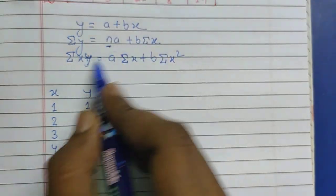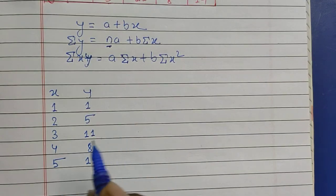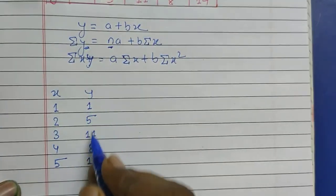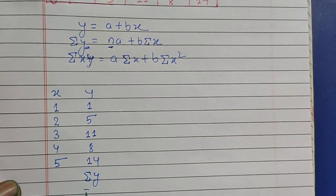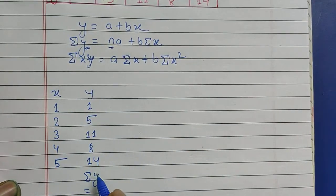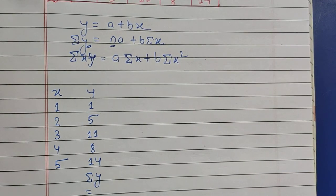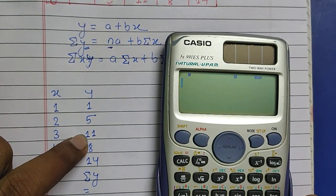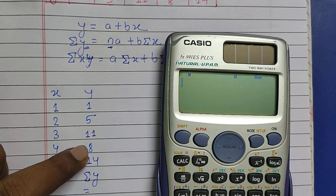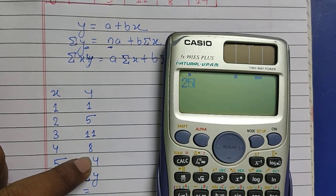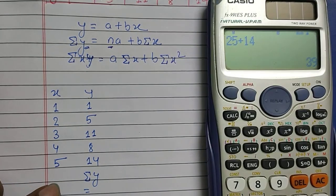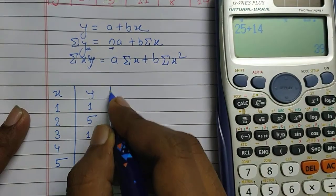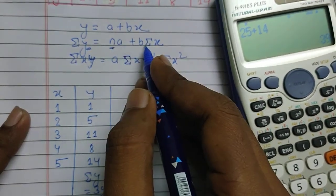From the given values of x and y, we need to find the required summations. We need to find summation y, which means adding all the y values. Summation y = 6 + 11 + 17 + 8 + 14... wait, let me compute: 6 + 11 = 17, 17 + 8 = 25, 25 + 14 = 39. So summation y = 39. Here n = 5.